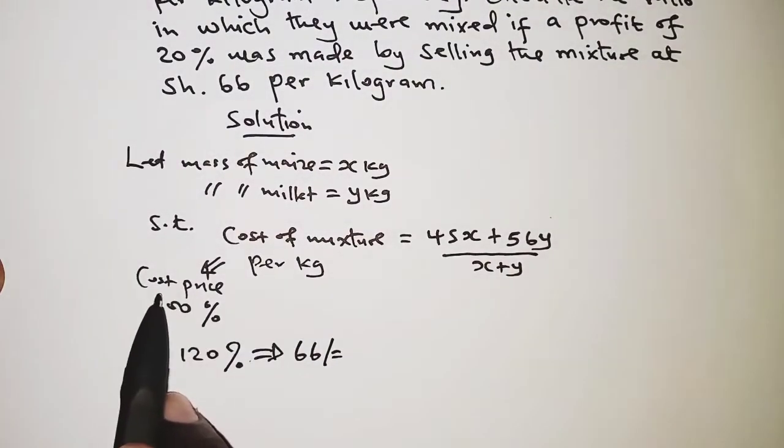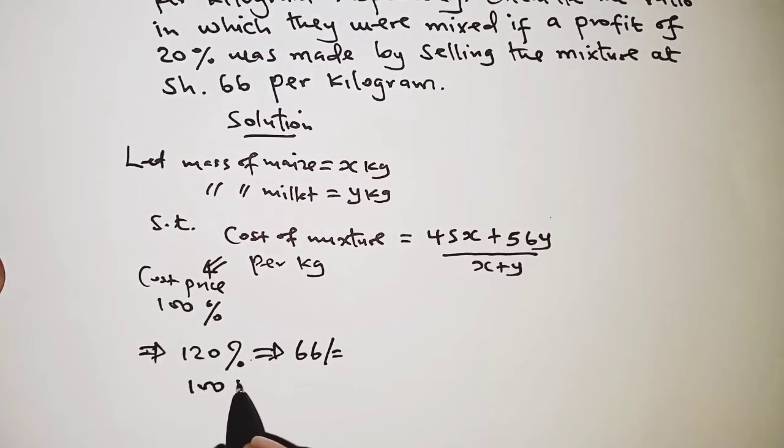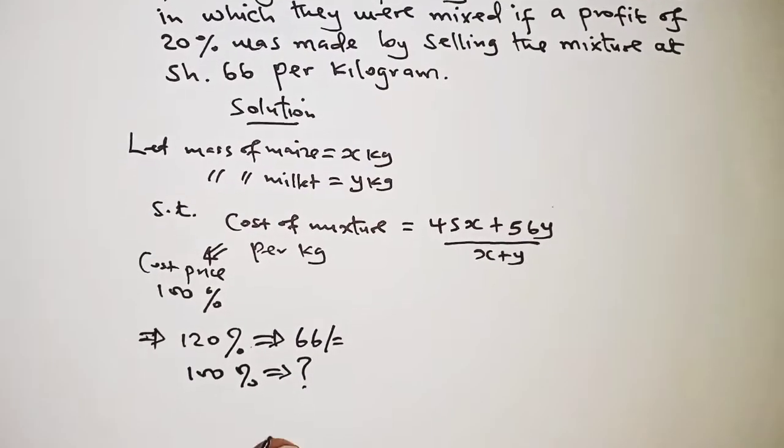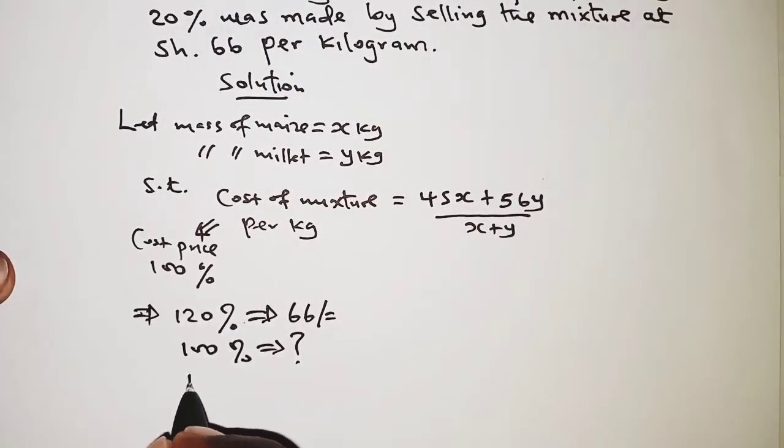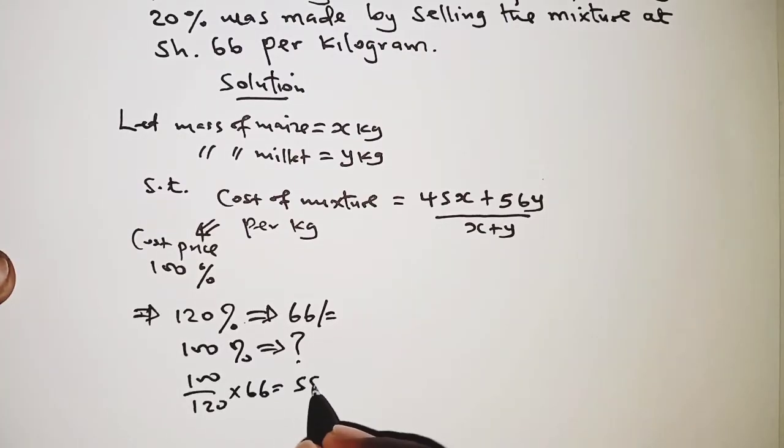That is the cost price or buying price, so we simply get it at 100 percent. That will simply be 100 over 120 times 66, so that should give us 55.